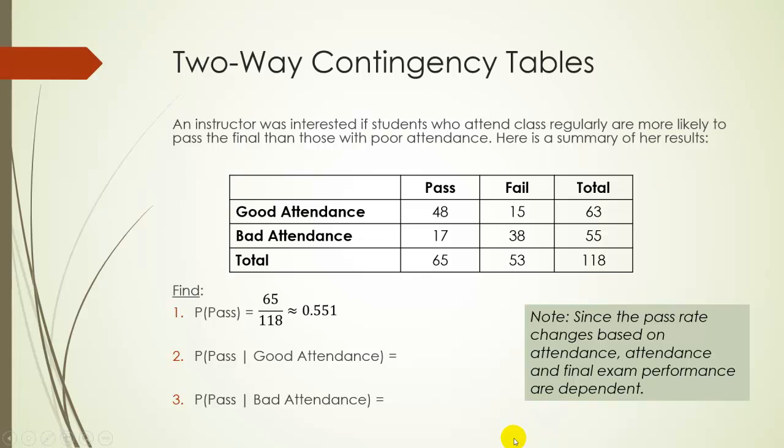For the second part we want to find the probability a student passes given they had good attendance. So the good attendance is this first line here. There are 63 students that had good attendance and only 48 of them passed. So it would be 48 out of 63 which simplifies to approximately 76.2 percent. Substantially higher than the pass rate for the whole class. If we look only at the bad attendance group only 17 out of 55 passed which is approximately 30.9 percent.